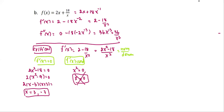x equals 0 is not in the domain, so we just ignore this value. From the original function, the denominator x makes x not be 0, otherwise the function is undefined. So far, we have two critical values.